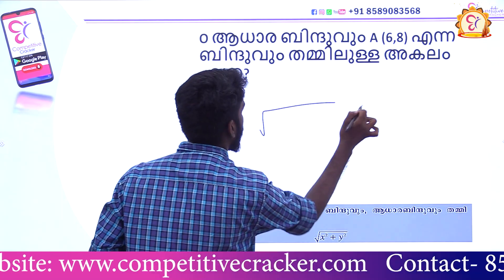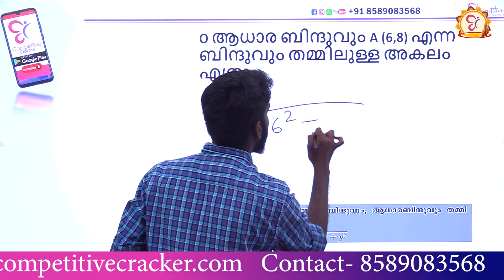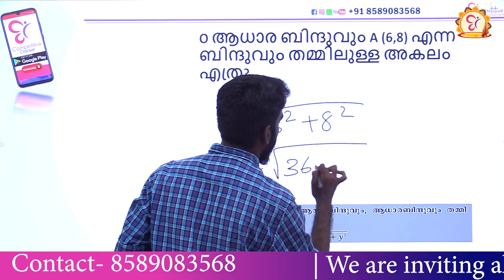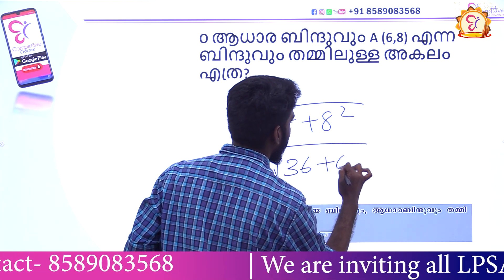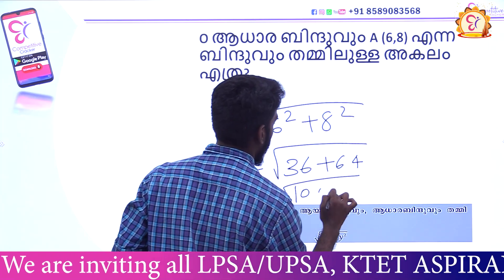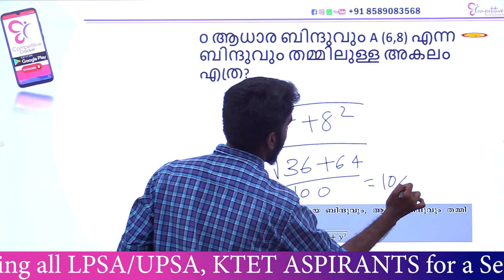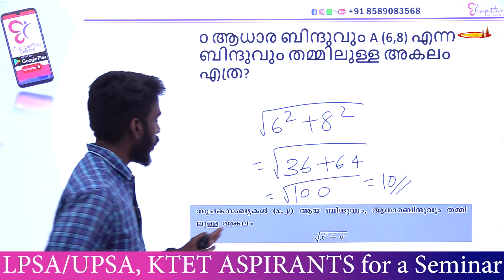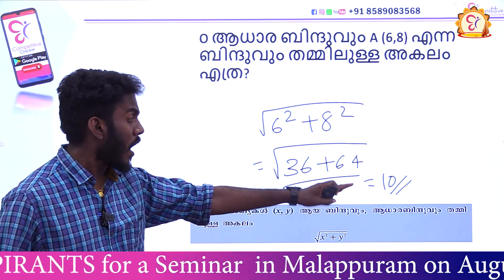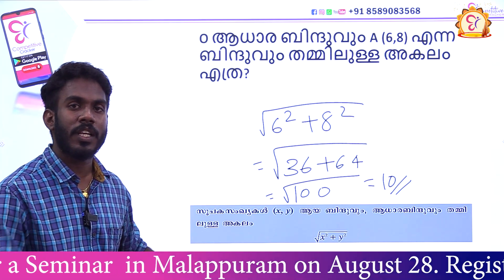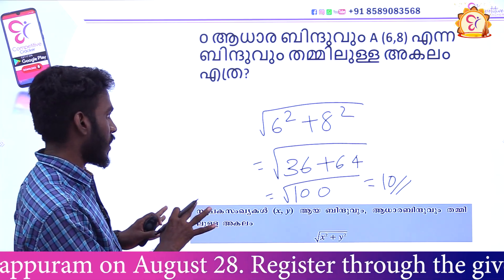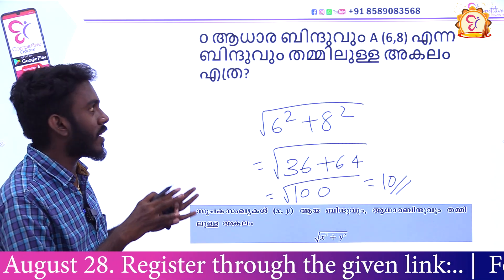We have to find the root of R squared plus 8 squared. The root of 100 is 10. So this is the root of y squared. For example, the root of 6 and 8 — we find the root of 36 plus 64 equals the root of 100, which is 10.